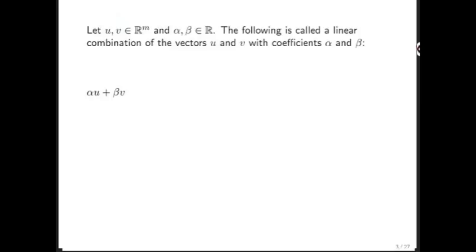If we're given two vectors of length m, u and v, and two scalars, alpha and beta, then taking the linear combination of u and v with coefficients alpha and beta is given by alpha times u plus beta times v. That's a scalar times the vector u plus a scalar times the vector v.